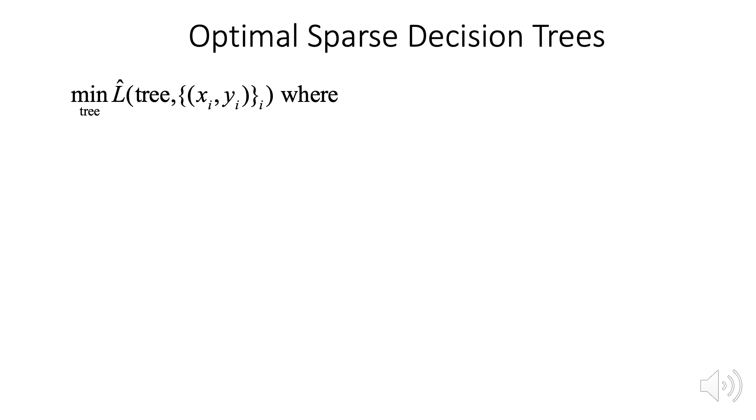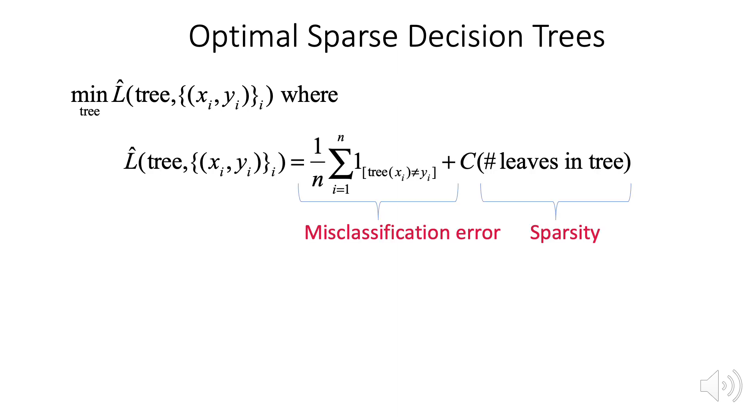Our work provides the first practical algorithm for producing optimal sparse binary split decision trees. We minimize the misclassification error regularized by the number of leaves in the tree. We don't use greedy splitting and pruning.